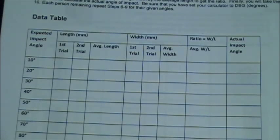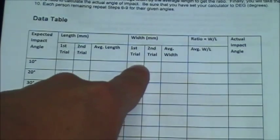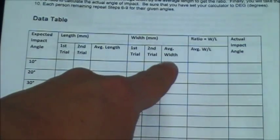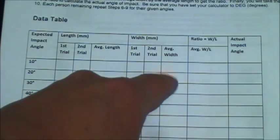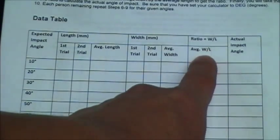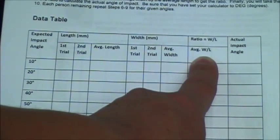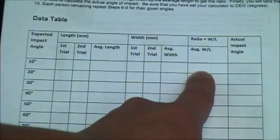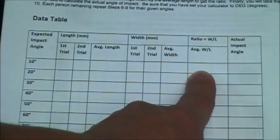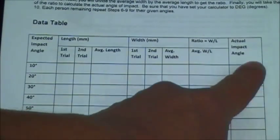Next, you'll take your recorded measurements for length and recorded measurements for width, and you'll find the average. Once you've calculated the average, you will divide the width by the length to calculate the ratio. Once you've calculated the ratio, you will use simple trigonometry to calculate the actual angle of impact.